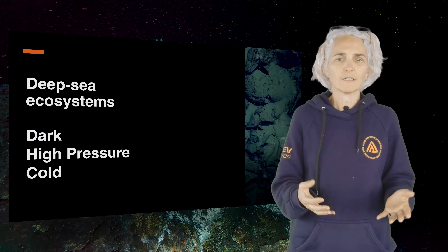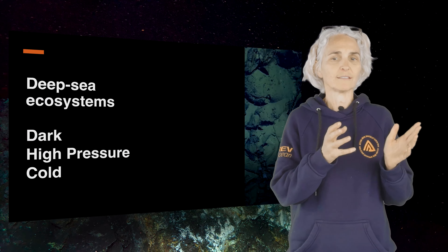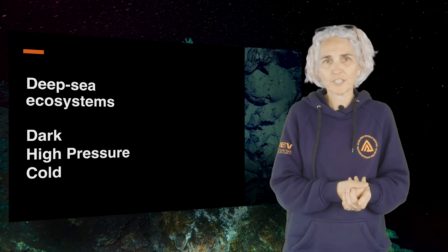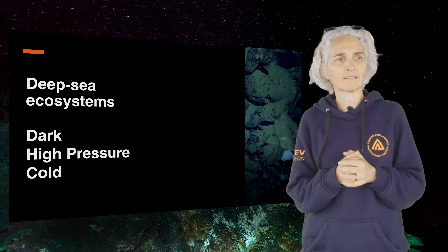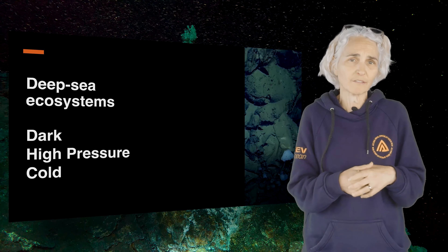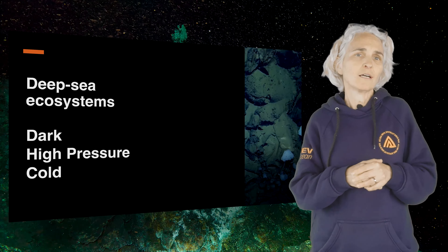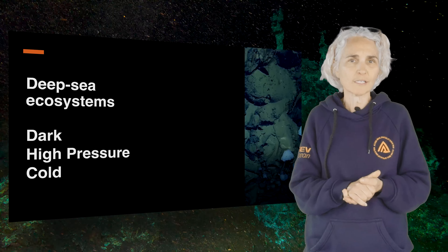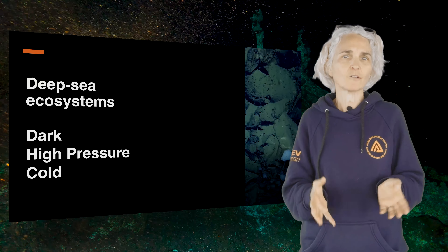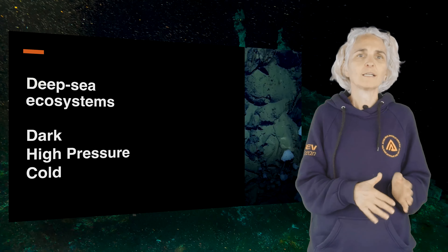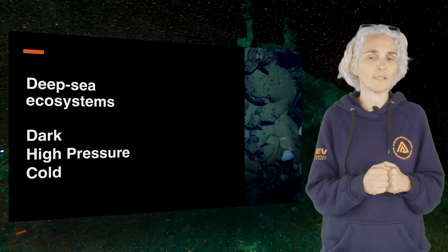The deep sea has certain particularities: it's dark, there is high pressure, and it's cold. Darkness starts at about 250 meters depth — that's where we arbitrarily decide the deep sea starts, because there's no more light for photosynthesis. Pressure increases by one atmosphere every 10 meters. Temperature is about 2 to 4 degrees Celsius in most of the deep sea, but in polar areas it can go below zero. Regions like the Mediterranean are 13 degrees and the Red Sea's lowest temperature is 21 degrees Celsius.